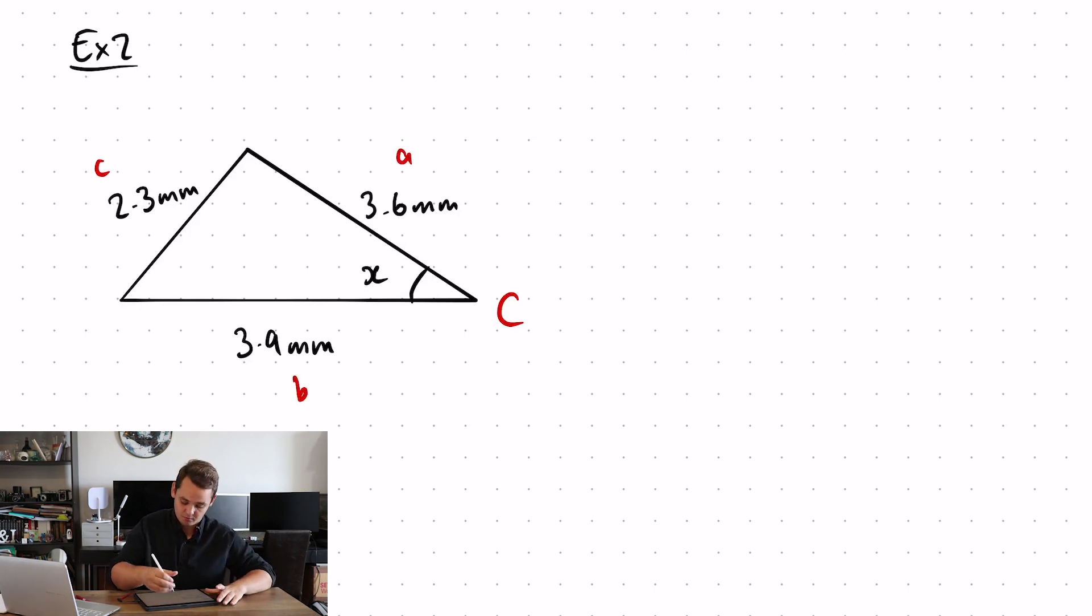So my formula for the angle is cos C is equal to A squared plus B squared minus C squared over 2AB. So, let's do some substitution.